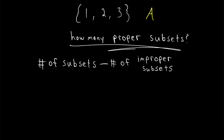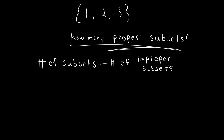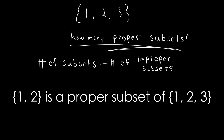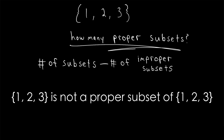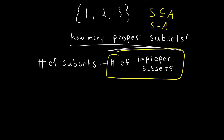Recall that given a set A, a proper subset of A is a subset of A not equal to A. For example, if we call the set on screen A, then the set containing one and two is a proper subset of A — it's a subset that's not equal to A, whereas the set A itself is not a proper subset. Thus, if we have a subset S of some set A, we know that S is going to be a proper subset as long as S is not equal to A. So the one case where S would be an improper subset would be if S is equal to A. In other words, there's only one improper subset of any given set — that is the set itself.